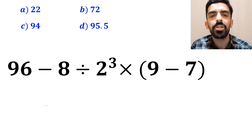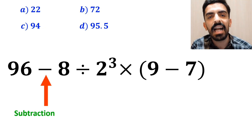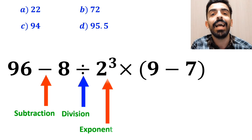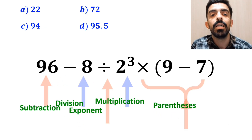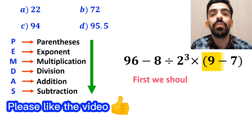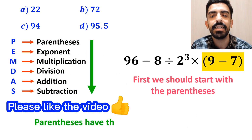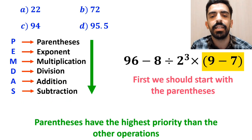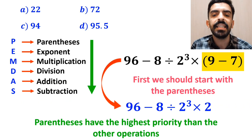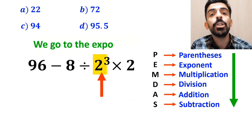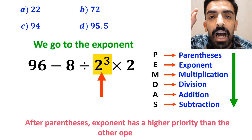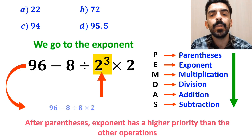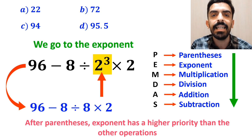As you can see on the screen, in this expression we have a subtraction sign, then a division sign, then an exponent, then a multiplication, and finally parentheses. According to the PEMDAS rule, first we should start with the parentheses, because parentheses have the highest priority. So we can rewrite this expression as 96 minus 8 divided by 2 to the power of 3 times 2. In the next step, we go to the exponent, because after parentheses the exponent has a higher priority than the other operations. So this expression simplifies to 96 minus 8 divided by 8 times 2.